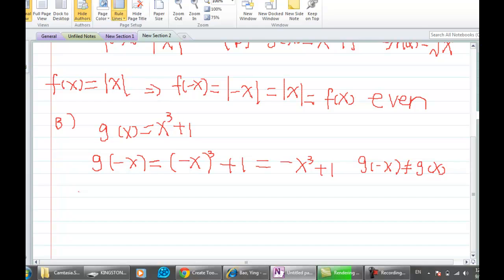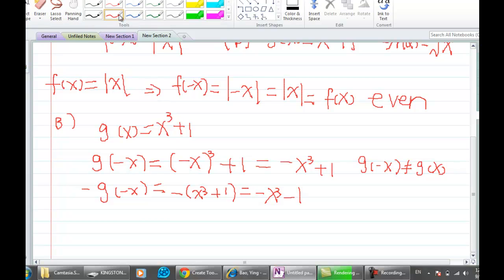Then we have -g(x), which is -(x³ + 1), which gives us -x³ - 1. So this does not really come out to be what we have as g(x) either. Let's compare them. We have a negative sign in front of x cubed here, not exactly. Not really either. So g(-x) does not really equal -g(x).